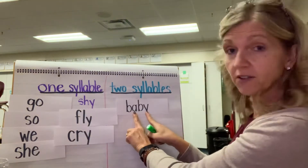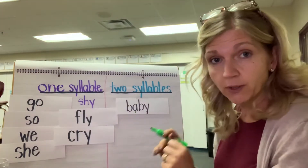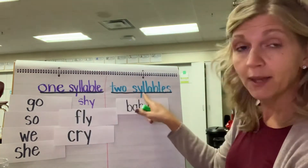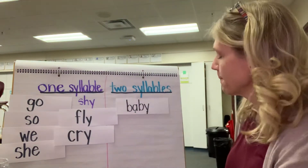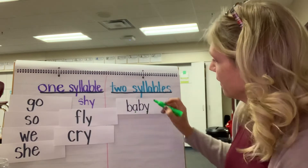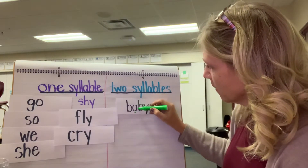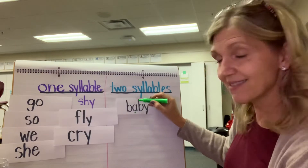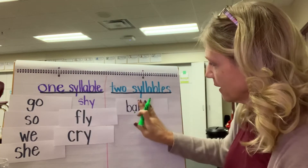Those two vowels are apart, aren't they? So it's probably going to be a two-syllable word. I put it in the two-syllable column — you only had to write the word 'baby.' I put a dot under each vowel. Now if I were to divide my word between the A and the second B, I would have an open syllable 'bay.'